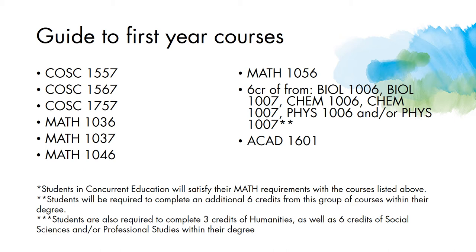You will notice all of your required first year Bachelor of Science Computer Science courses as well as ACAD 1601, a breadth requirement. The single asterisk provides information for those within concurrent education. The double asterisk allows students to understand some of their future planning, and the triple asterisk highlights the need to fulfill breadth requirements within your degree.